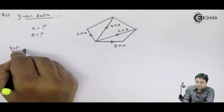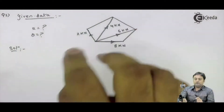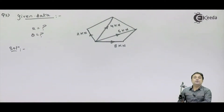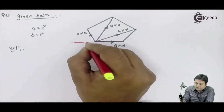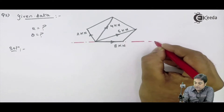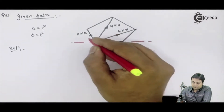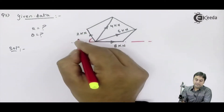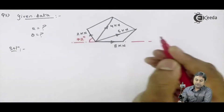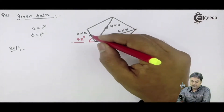First, we will convert this pentagon problem into the regular concurrent force problem which we have been solving. To convert that, if I extend this horizontal line — we know that for a regular pentagon the inclination of this edge with respect to the horizontal line is 72 degrees.